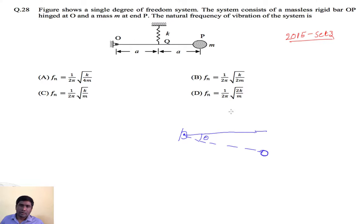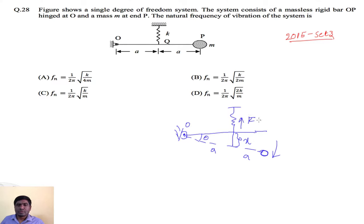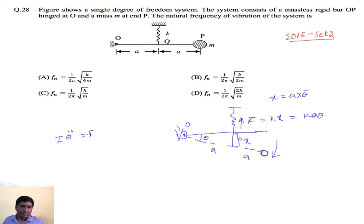This is a mass M on a rod, displaced at angle theta. The distance is X, point O is at a distance A from the spring attachment, and then again distance A. We apply moment about point O. The rod rotates clockwise, and the spring force acts in the anticlockwise direction. Spring force equals K times X, and X equals A·theta for small theta, so spring force equals K·a·theta.